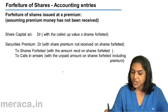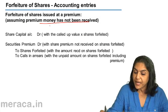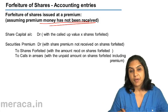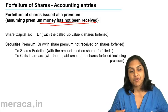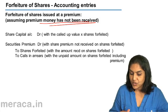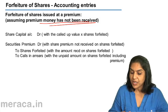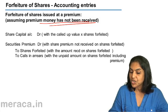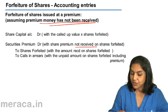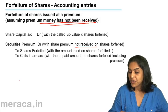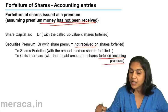Forfeiture of shares issued at a premium, assuming the premium money has NOT been received: if premium money has not been received, the amount of securities premium which was credited at the time of allotment can now be debited — it can be written back. The entry in that case is: Share Capital Account debit with the called-up value; Securities Premium Account debit for the premium not received on the forfeited shares; to Shares Forfeited Account with the amount actually received; to Calls in Arrears with the unpaid amount — including premium.